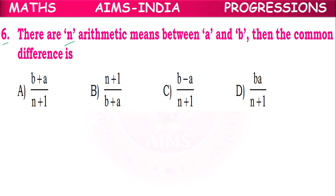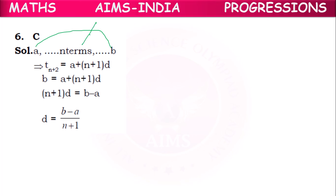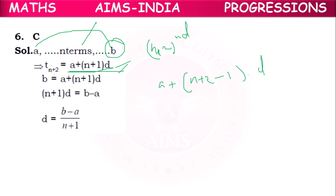Sixth question: There are n arithmetic means between a and b. What is the common difference? Between a and b we insert n means, so the last term b is the (n+2)th term. T(n+2) = a + (n+1)d = b, which gives (n+1)d = b − a, so d = (b − a)/(n + 1). Option C is correct.